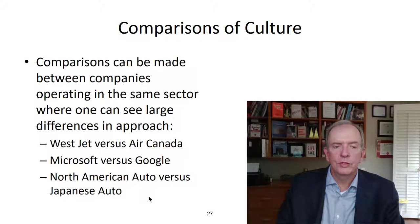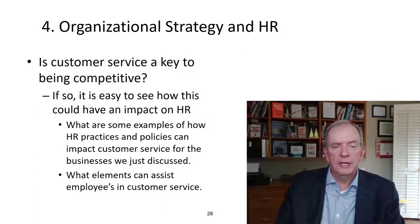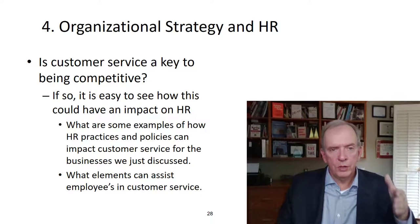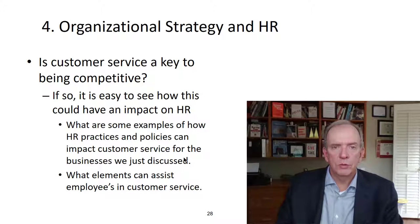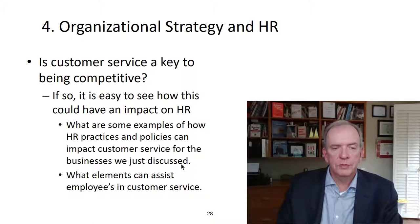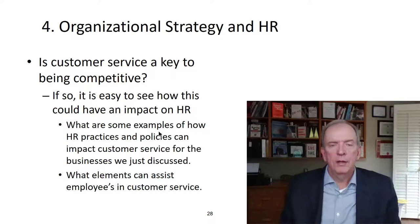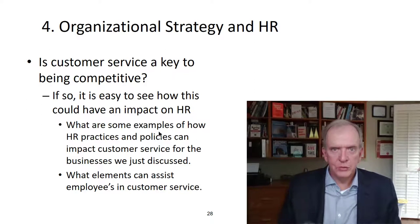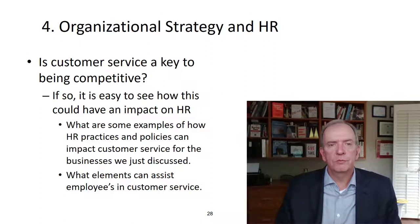We'll talk about North American auto versus Japanese auto industries — traditional perspectives, continuous improvement differences, with more realignment today than in the past. Category four is organizational strategy: what are we trying to accomplish, and what's the path to reach our overall goals? Policies can impact customer service. What elements can assist employees in customer service? Looking at organizational strategy and ensuring alignment sets the path to achieve your goals, with day-to-day tactics and realignments to reach overall objectives.